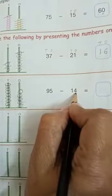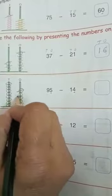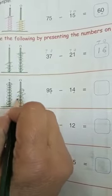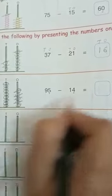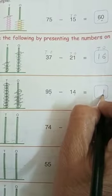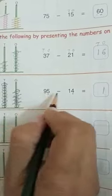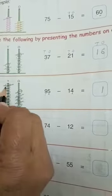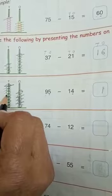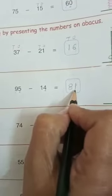Now we have to take away 4 ones from 5 ones: 1, 2, 3, 4. How many 1's are left? 1. Clear? Now we have to take away 1 ten from 9 tens: 1. Now how many 10's are left? 1, 2, 3, 4, 5, 6, 7, 8. 8 tens. The answer is 81.